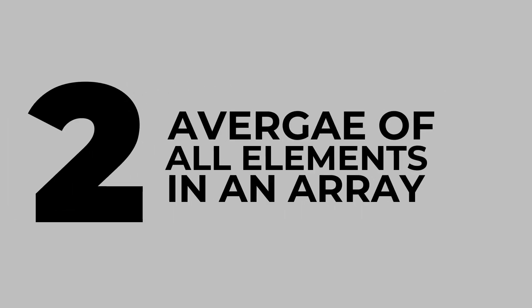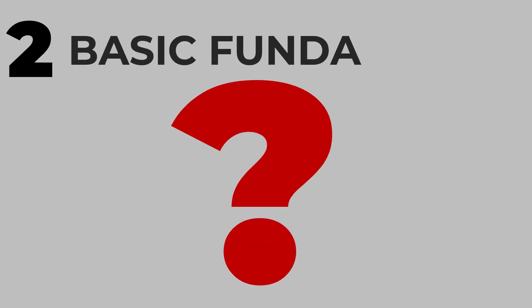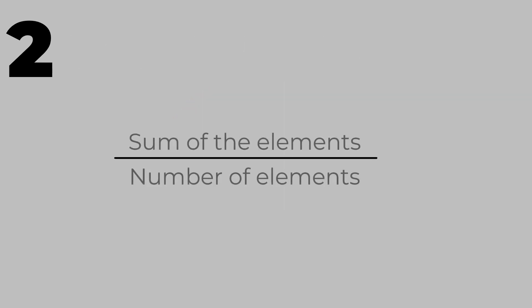Today we will write our second array program: finding the average of all elements in an array. The basic concept of average is the sum of all elements divided by the number of elements. Similarly, when we code we have to do the same thing — first we find the sum of all elements.